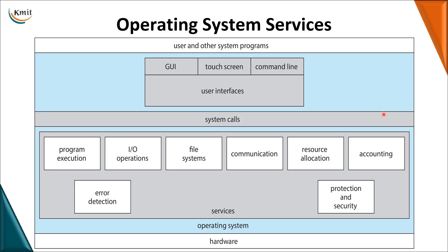Let us start with operating system services. If you see, this is your operating system — underneath you can find the hardware, and the other end is the user. The user will interact with the hardware with the help of the operating system. In between, these are all the services provided by the operating system. The system call is nothing but when the user interacts with an interface and wants services to be executed — system call acts as an interface and executes those services.